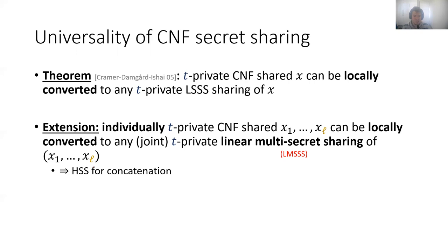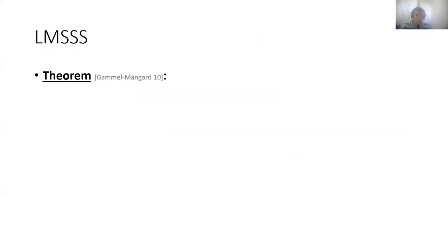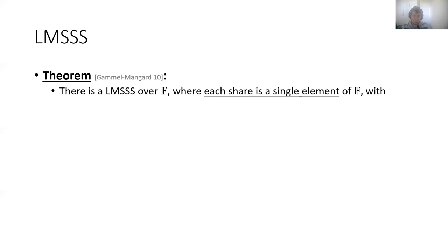This already implies HSS for concatenation, given that we find a linear secret sharing scheme for all the secrets. This becomes our goal. There is a theorem by Gamel and Manga from 2010 where they construct a linear multi-secret sharing scheme over a field F, where each share is a single element of the field, with K servers, L secrets, T privacy, and information rate L over K. They show that this exists if there is a linear code with parity matrix H such that the code has distance at least T plus one and rate at least L over K.